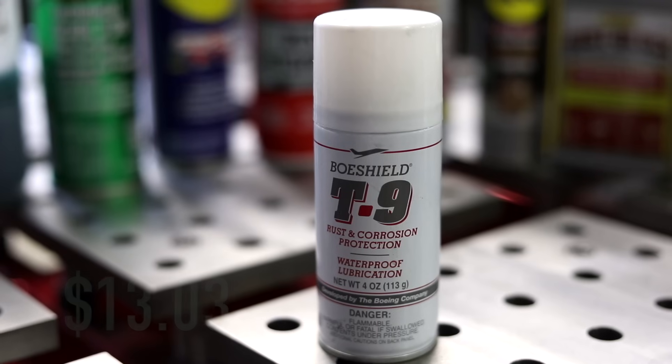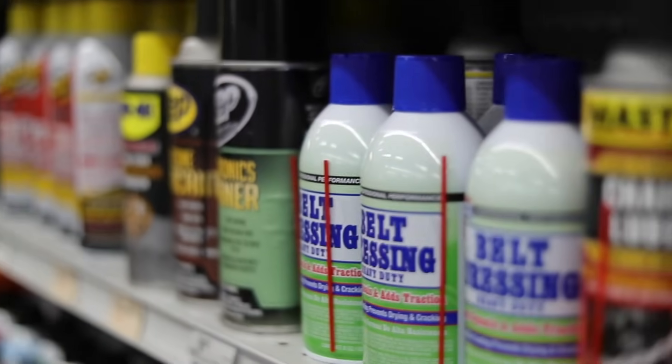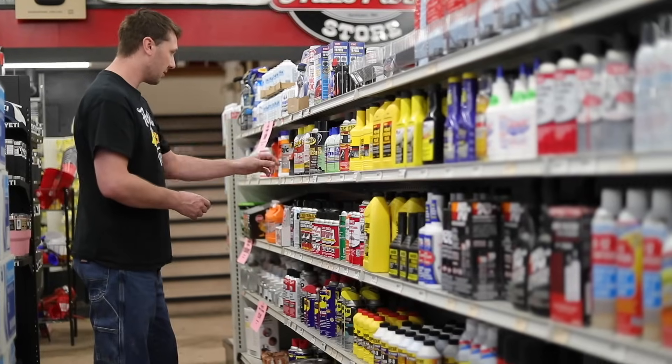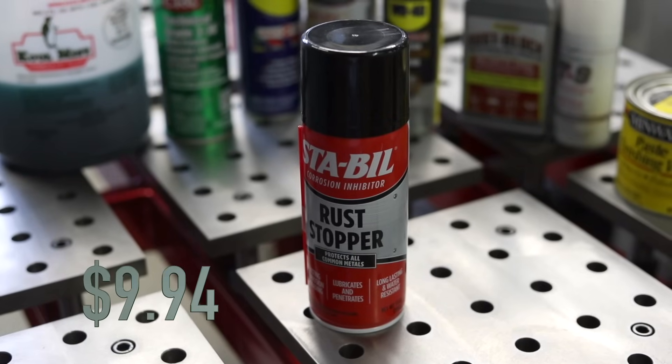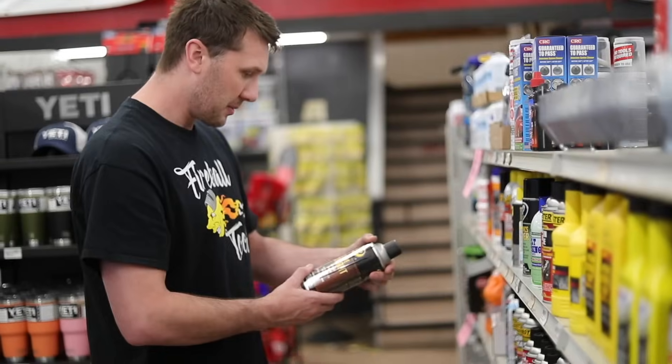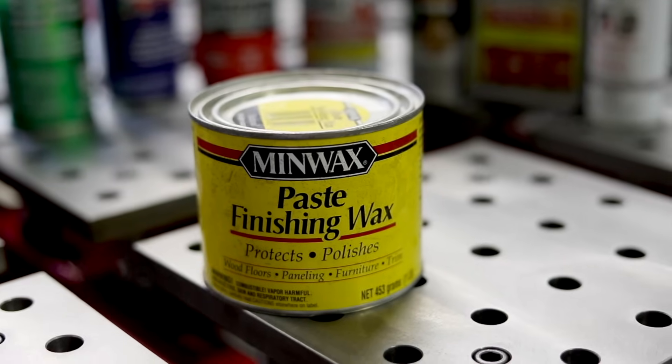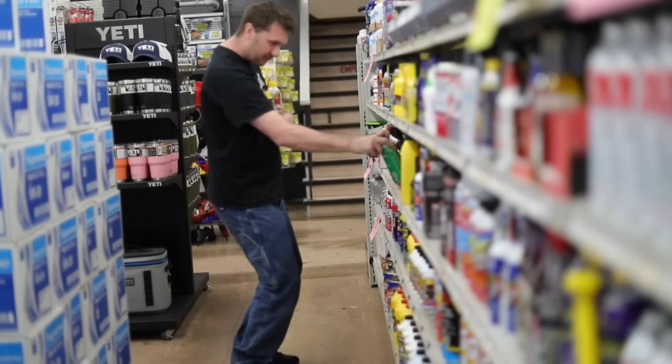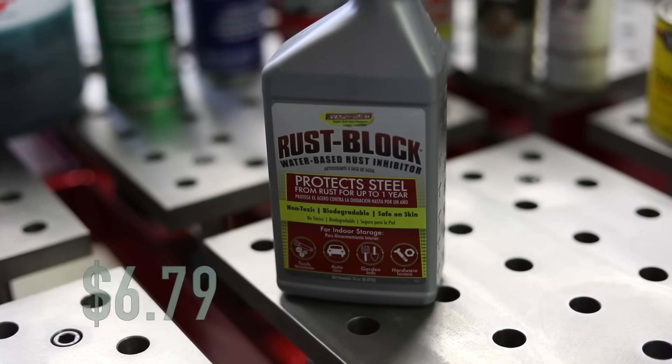First on the list, Bow Shield T9, CRC 3-36, Stable Rust Stopper, Minwax Finishing Paste, WD-40's Specialist Corrosion, and Water-based Rust Block.